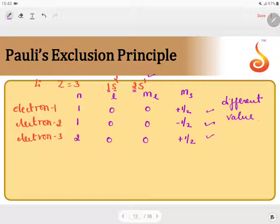Even though for the first two electrons all the three quantum numbers are same, but the last quantum number is different. Therefore, that is what is told by Pauli's exclusion principle.